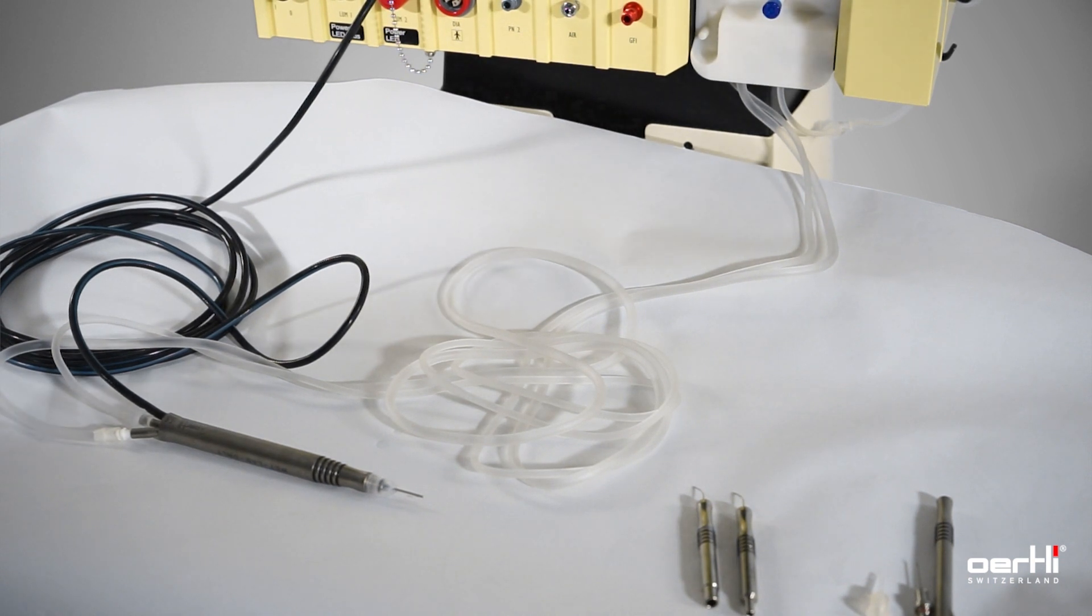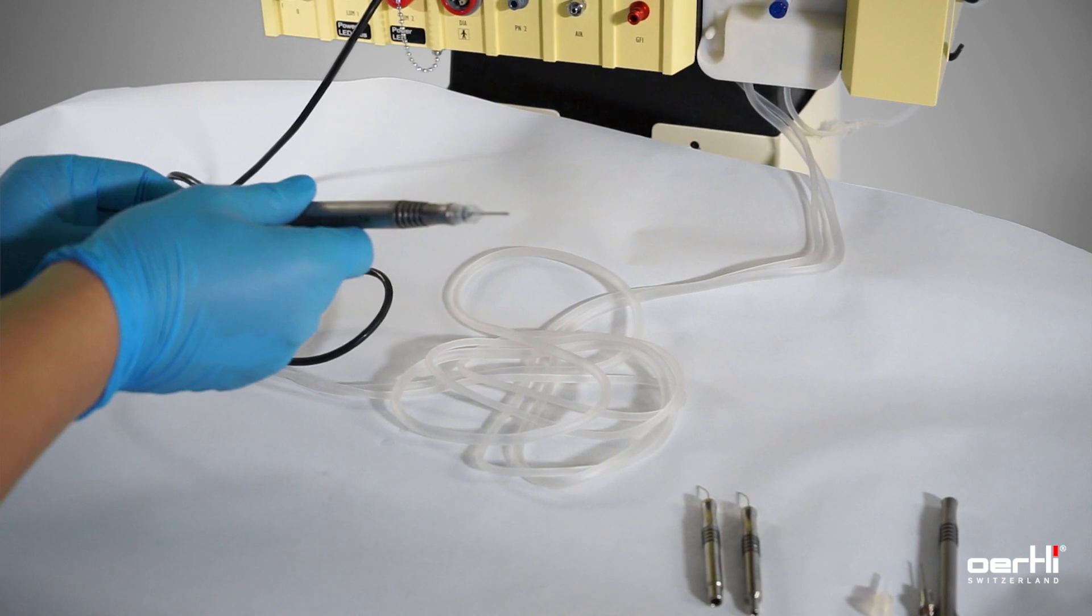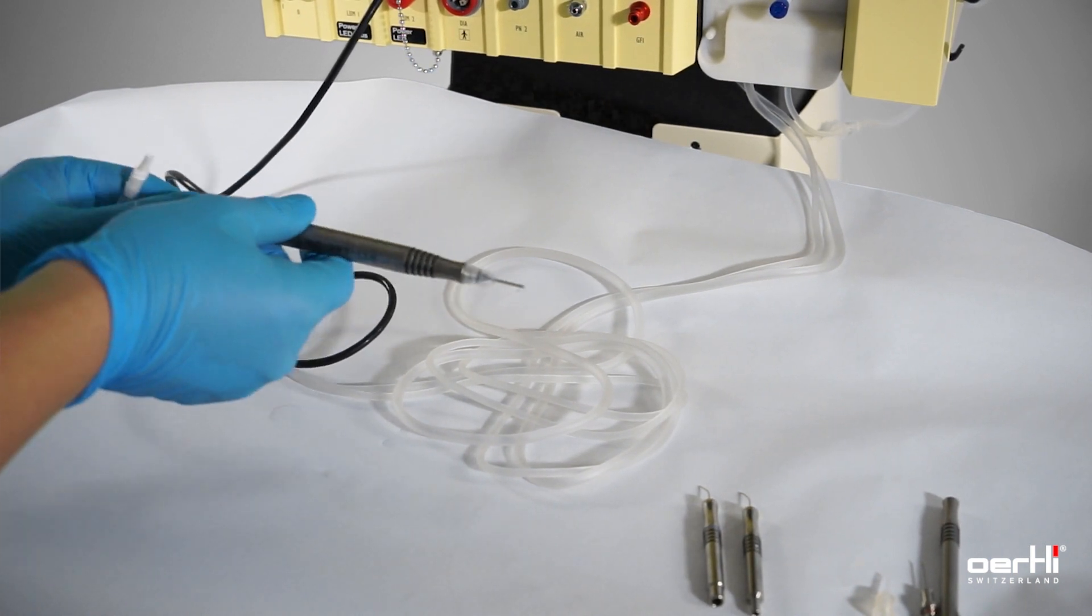After the lens removal, disassemble the irrigation line and aspiration line from the FACO handpiece.